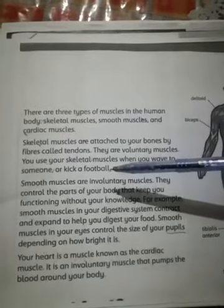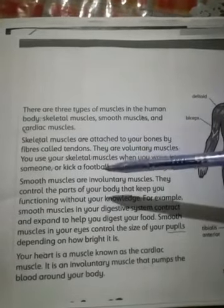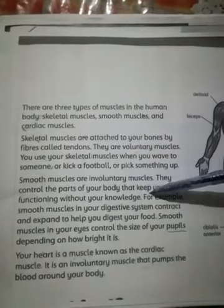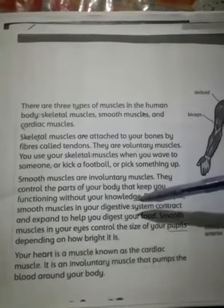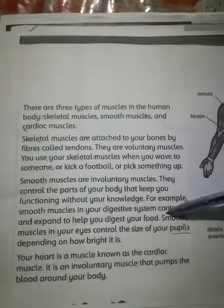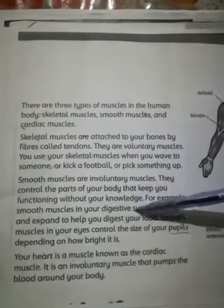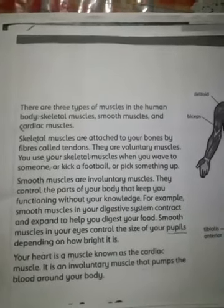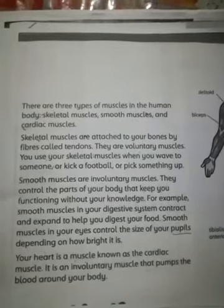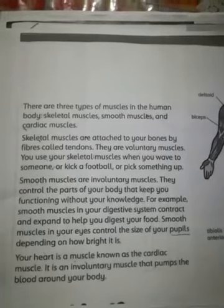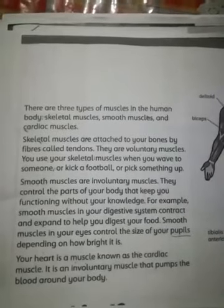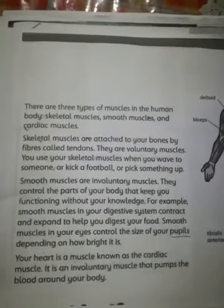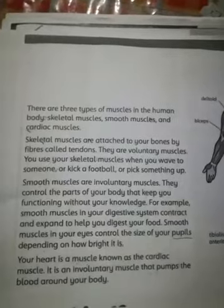اب آتے ہیں smooth muscles کی طرف۔ Smooth muscles are involuntary muscles. They control the parts of your body that keep you functioning without your knowledge. For example, smooth muscles in your digestive system contract and expand to help you digest your food. Smooth muscles جو ہوتے ہیں وہ involuntary ہوتے ہیں یعنی ہمارے control میں نہیں ہوتے۔ یہ ہماری body کے وہ parts ہوتے ہیں جن کا کام ہمارے knowledge میں نہیں ہوتا — وہ work تو کر رہے ہوتے ہیں لیکن ہماری مرضی سے نہیں۔